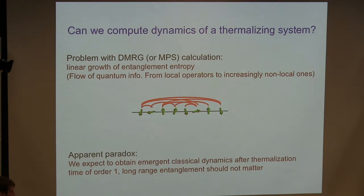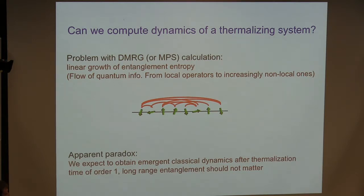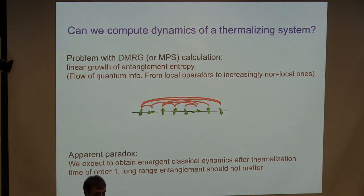There is an obstruction to calculating dynamics. But here there is an apparent paradox, because as I just mentioned, we expect that after a fairly short time on the order of the thermalization time, there is an emergent classical dynamics that follows the chaotic regime, giving you local thermalization. So why do we need so much entanglement in order to capture effectively classical dynamics? This is the paradox I want to address in this talk. I'm not saying I have a full solution, but I'll show two approaches that in various regimes seem to capture this correctly.